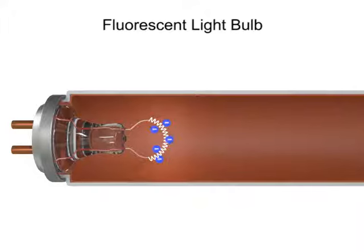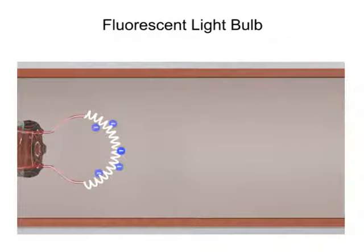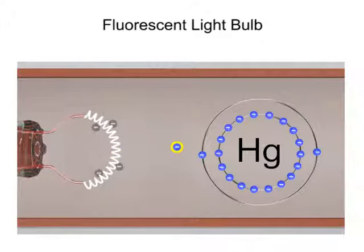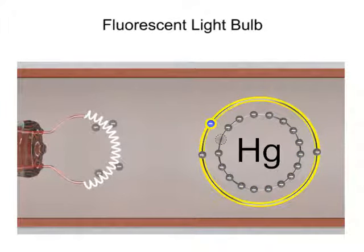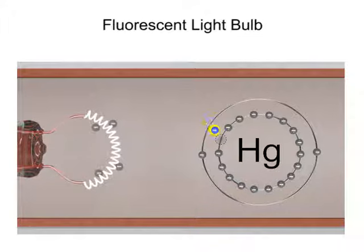An AC voltage pulse supplied by a starter pushes the electrons from one end of the tube to the other. If one of the free electrons collides with an electron of the mercury vapor, the electron is bumped from a lower to a higher energy level. The electron quickly returns to its lower energy state and in the process releases an ultraviolet photon.